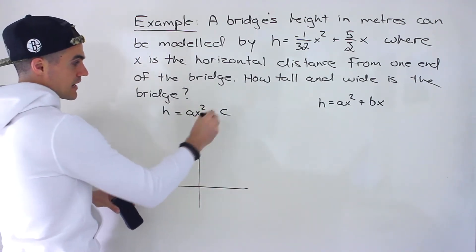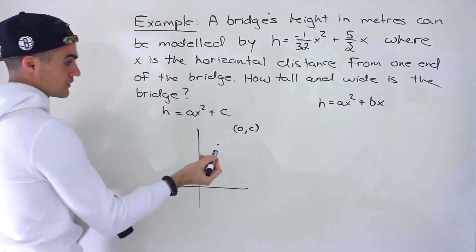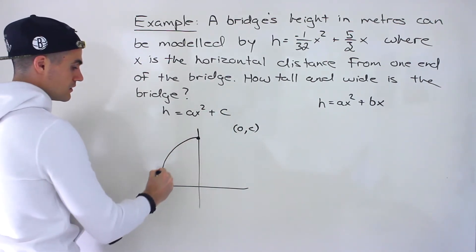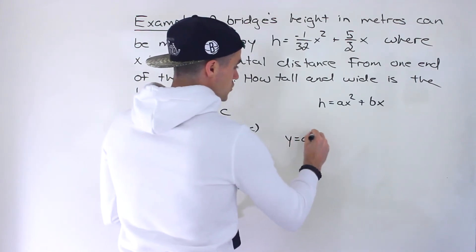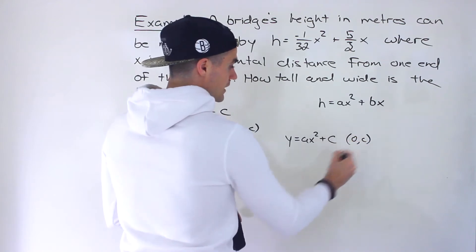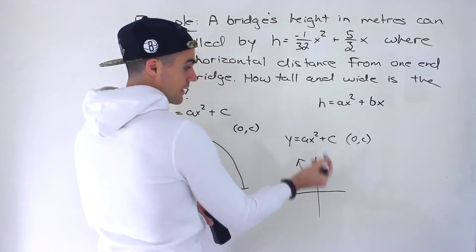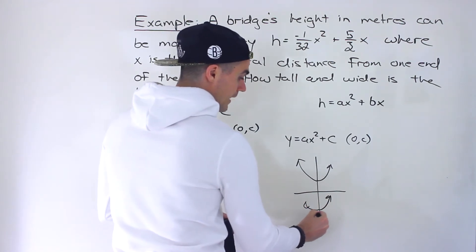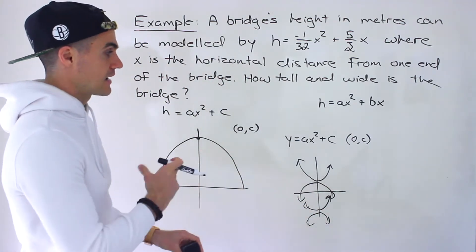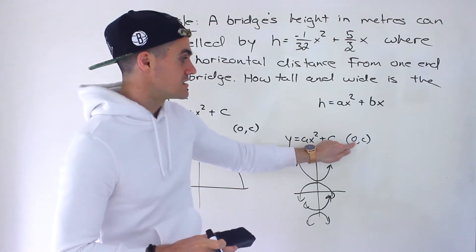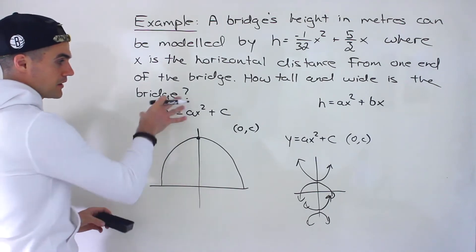With the ax² + c format, the vertex is always at an x-value of zero — that's always the axis of symmetry — and the y-value of the vertex is the c value. So the bridge was up at the vertex and the parabola opened downward. In general, a quadratic in this format can take many shapes, but the vertex is always at (0, c), which is also the y-intercept.